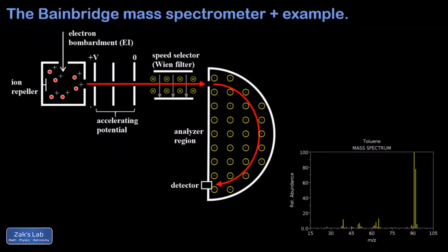In this video we introduce the Bainbridge mass spectrometer, which is a type of magnetic sector analyzer for doing mass spectrometry.